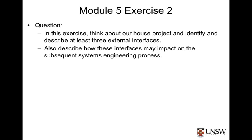If the external systems are not within our control — i.e., not within our organisation — it's prudent to seek formal agreements about the interface with the relevant external organisation. This helps to avoid problems later in the systems engineering process where our system needs to connect to these external systems. These agreements do not guarantee there will be no problems, but they do help to reduce the chances. In this exercise, identify and describe at least three external interfaces for the house project and describe how they may impact on the systems engineering process.